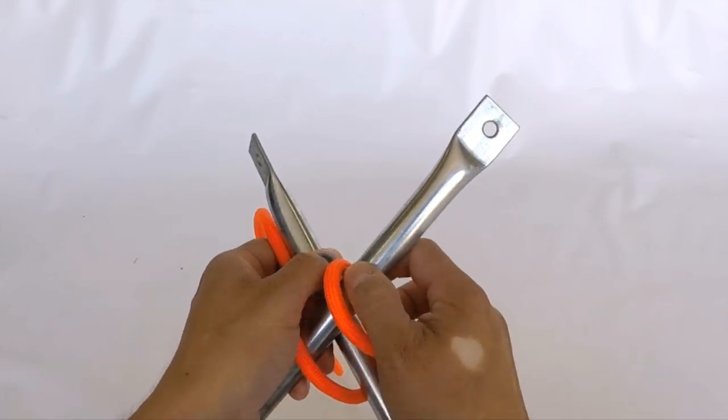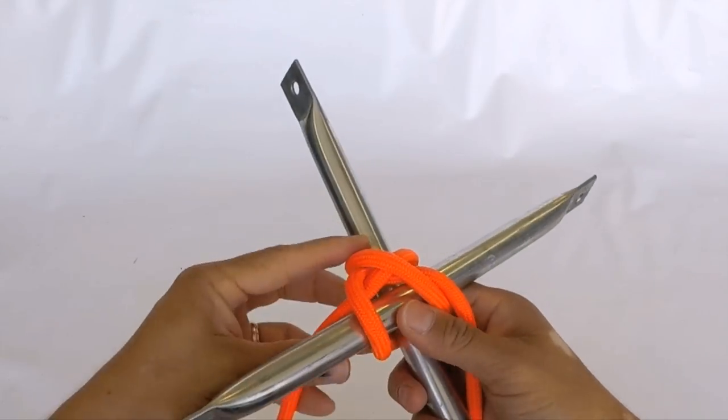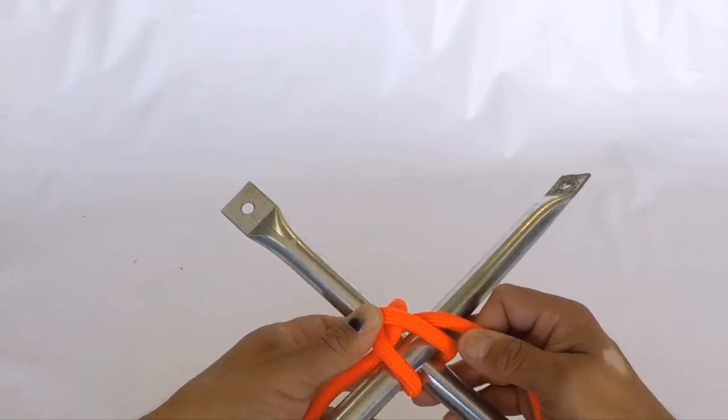Now we're just going to pull this tight. We just have to make sure that when we do so, the top part of the rope is pressing down on the overhand knot that we created.